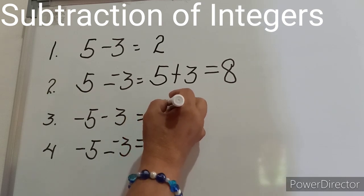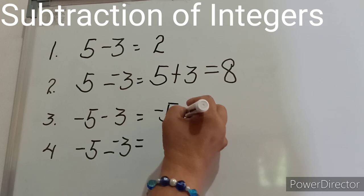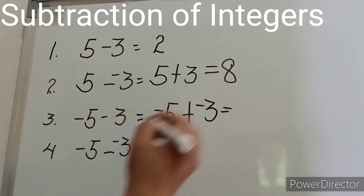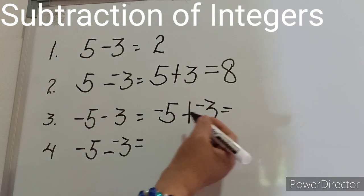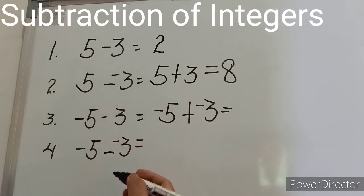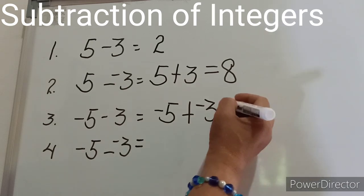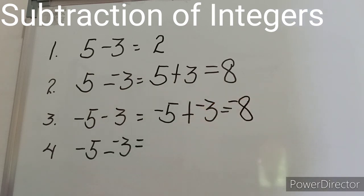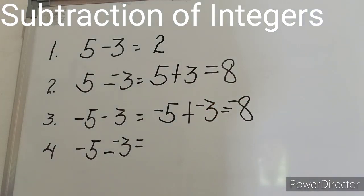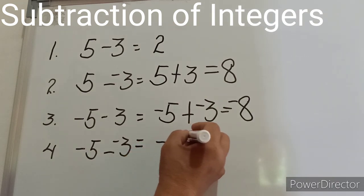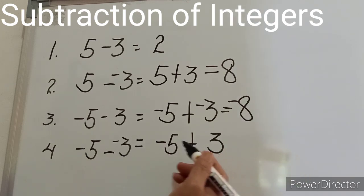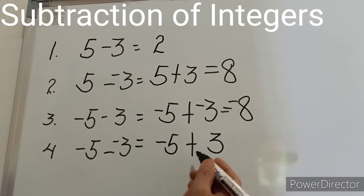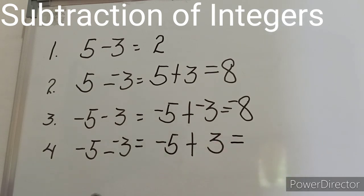Let us take another one. We have negative five minus a positive three, which becomes negative five plus negative three. What happened to our subtrahend? It changed from positive to negative, and the operation subtraction becomes addition. We now have addition of like-signed numbers: five plus three is equal to eight, and we affix their common sign to the result.